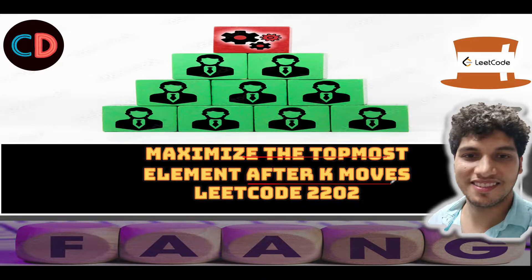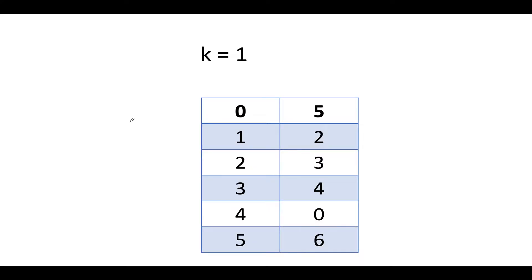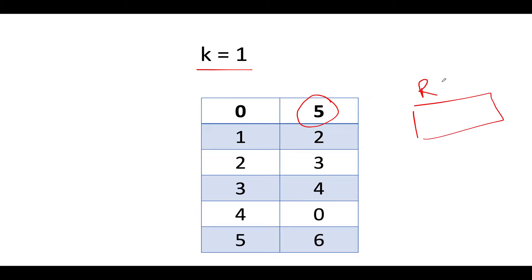Maximize the Topmost Element After K Moves — LeetCode 2202, a medium level question. For the first example, elements are five, two, three, four, zero, six. With k equals one, the only move is to remove the zeroth element, which is five. Five gets added to the removed set and two becomes the topmost element, so two is our final answer.